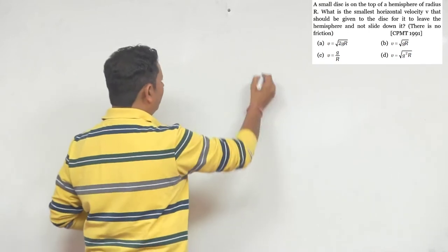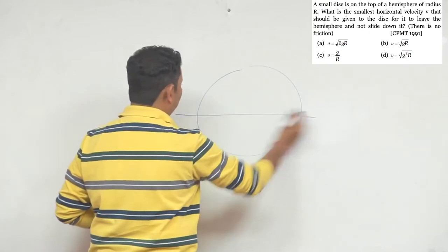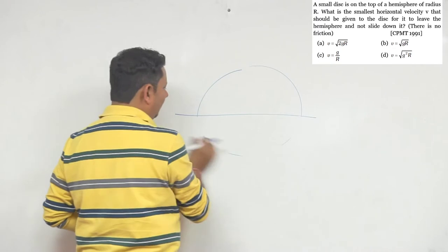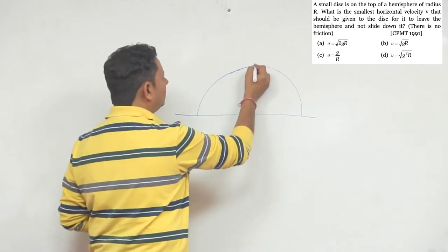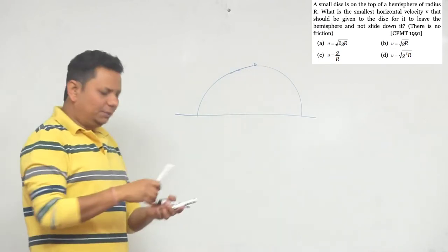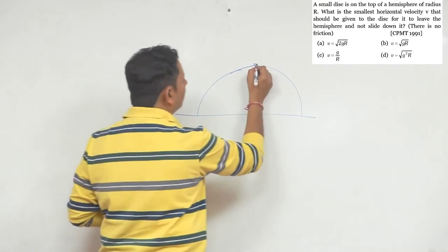Let me draw it again. This is a circle, let me make it half. This is your hemisphere bowl. On top of this hemisphere bowl, here you have placed a small particle. This particle is given a horizontal velocity v here.